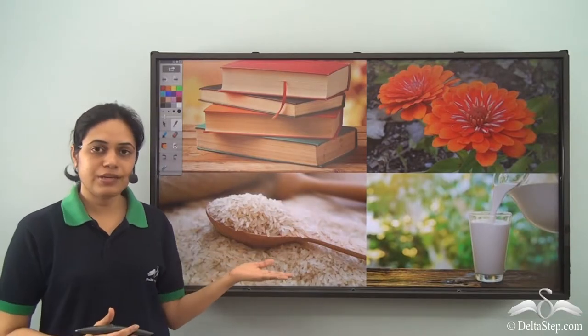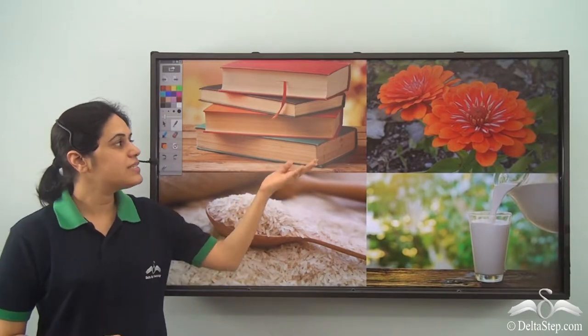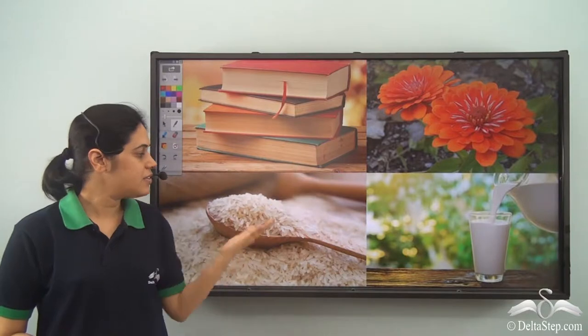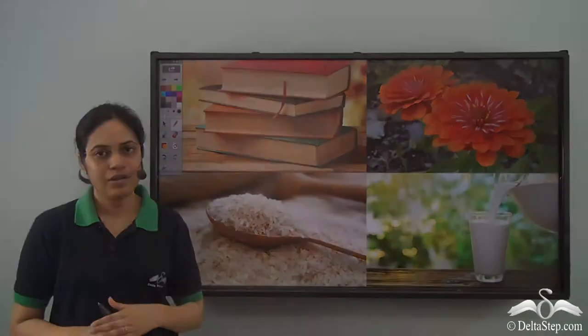What do you see here? There are books, flowers, rice and milk.